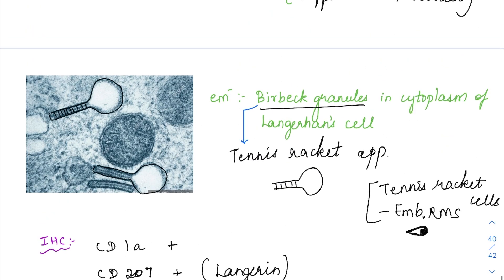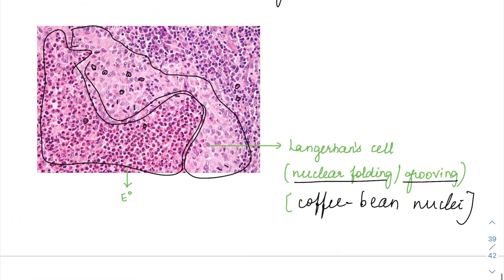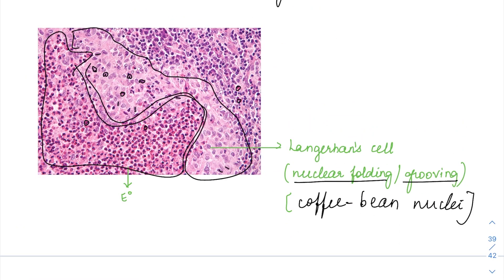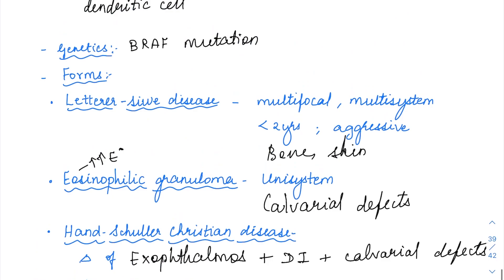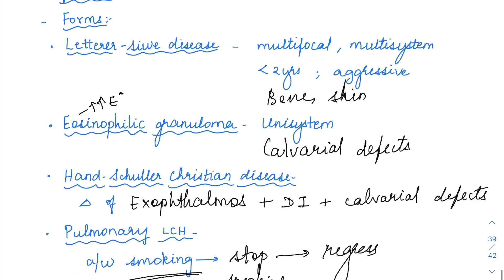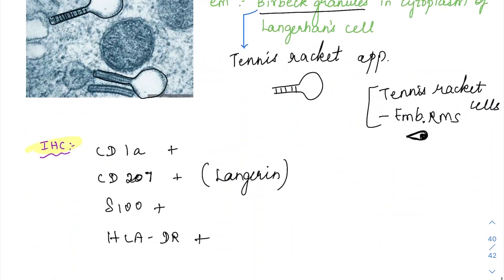In LCH if you see this electron microscopic image, the immunohistochemistry, this microscopic image is going to be important. Apart from this, this forms can be asked and BRAF mutation. LCH is again quite important.